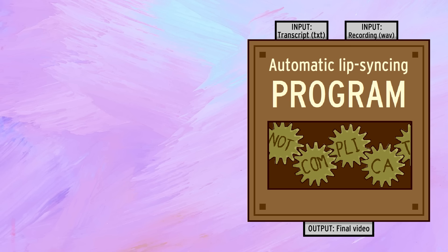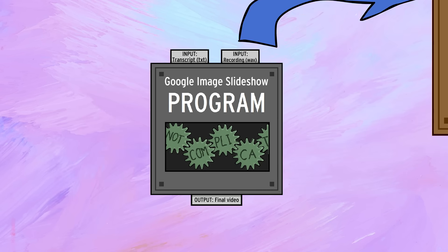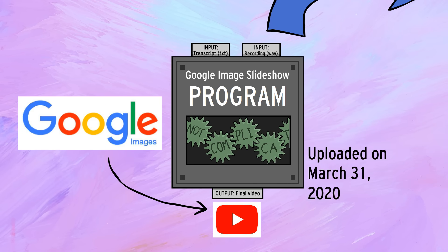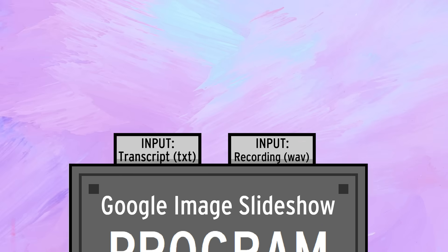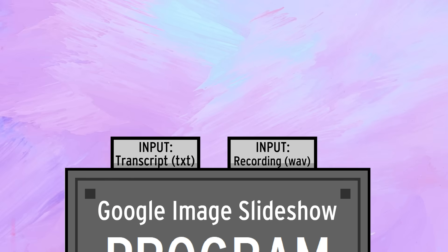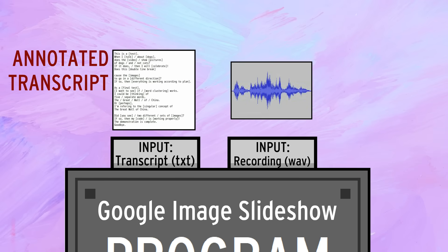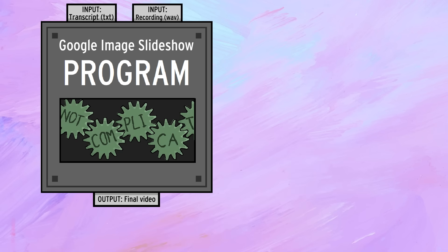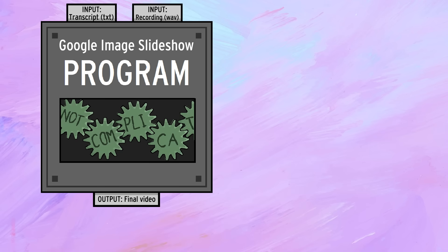Anyway, this project is an extension of my program that automatically creates YouTube videos with Google Images, which I finished about two weeks ago. As a reminder, the only inputs for this machine were an annotated transcript and an audio file of me reading that transcript. Everything else — meaning all the visuals — were to be generated automatically, as you can see here.